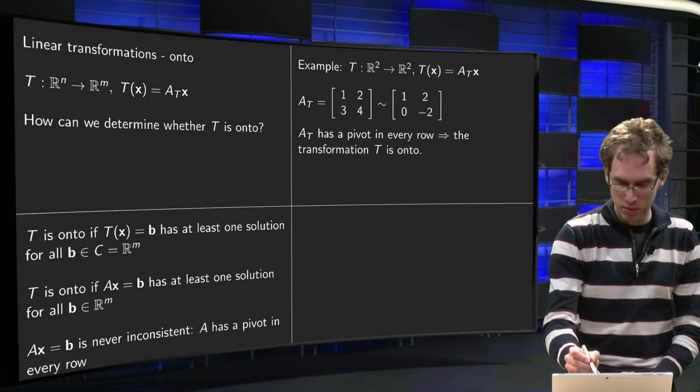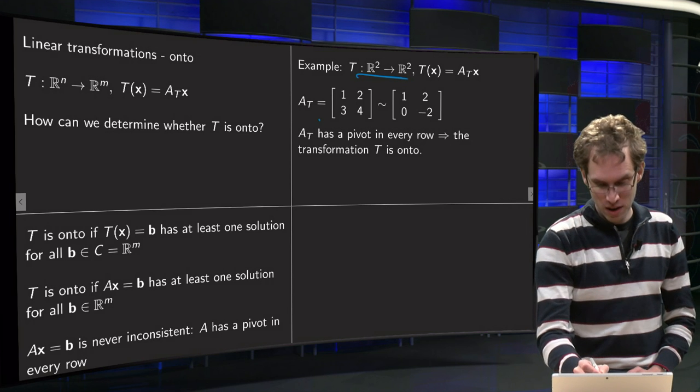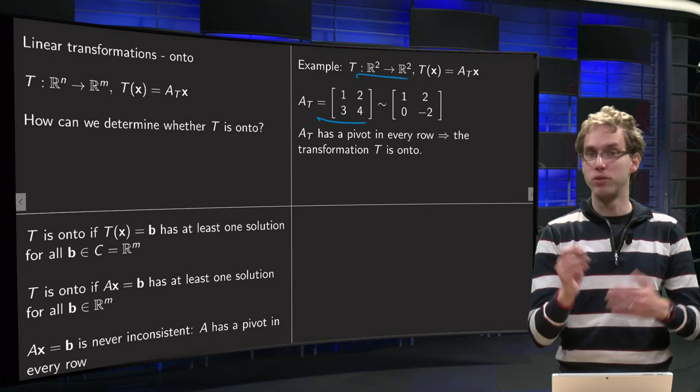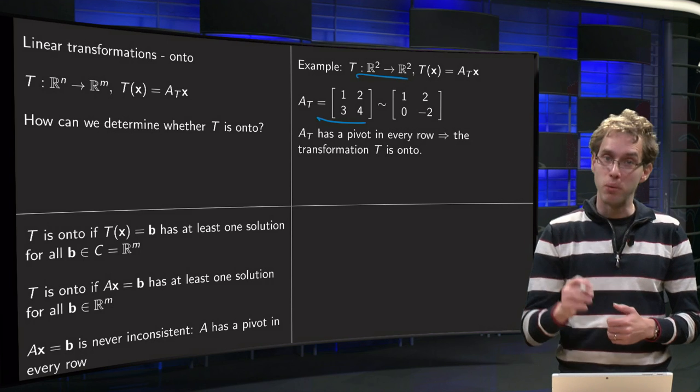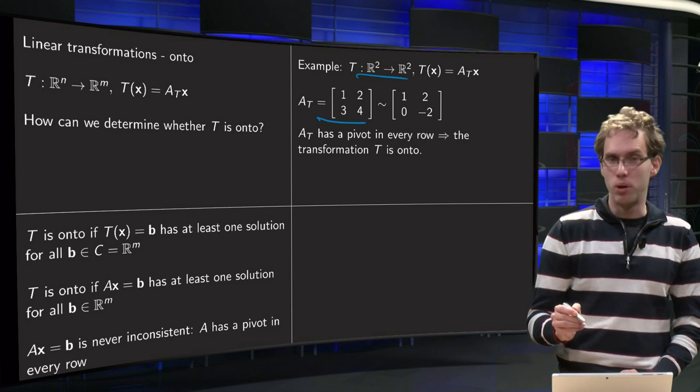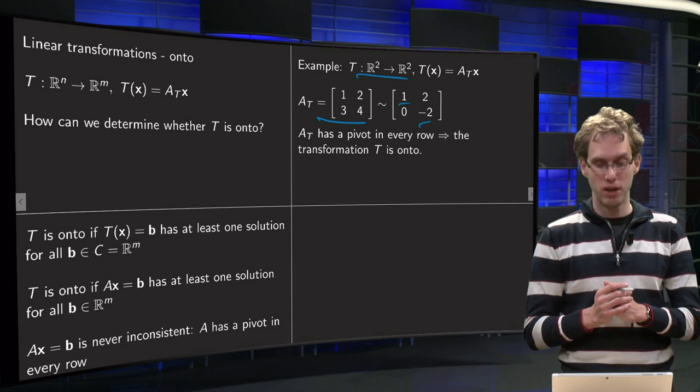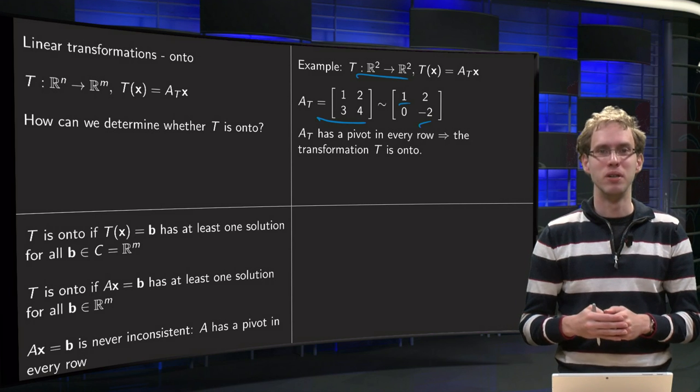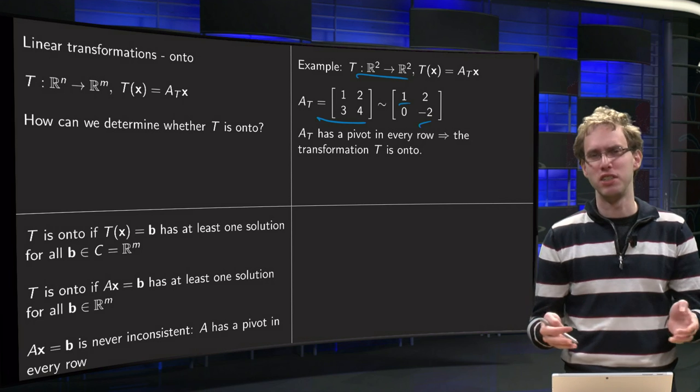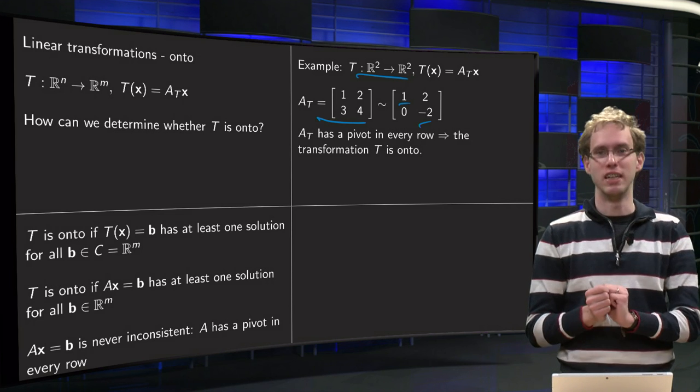So for example we have our transformation here from R² to R², T(x) is given by AT times x, where we have our A over here: [1, 2; 3, 4], and we wonder whether the transformation T is onto. So we do row reduction, it's only one step, we see our pivots already, we see every row has a pivot, so that means that the corresponding transformation T is onto. Please never say that the matrix is onto, the matrix cannot be onto, the transformation is onto.